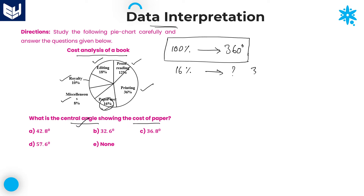Now you can do the cross multiplication: 360 into 16 divided by 100. The two zeros in 360 and 100 cancel, giving 36 into 16 divided by 10. It is better to keep the denominator zeros as is for a faster approach, so don't cancel further with two tables.